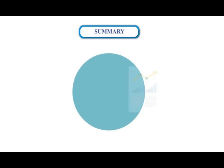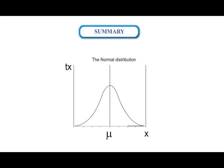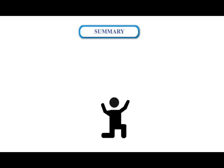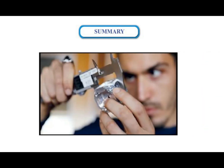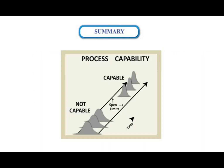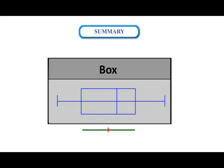Most Six Sigma projects will involve analyzing normal sets of data or assuming normality. Process capability analyzes the uniformity of the process and measures the parameters of the product rather than the process itself, expressed as a process capability index. A box plot, also known as a box and whisker diagram, is a basic graphing tool that displays centering, spread, and distribution of a continuous data set. Box plots are used as graphical summaries depicting distributions.